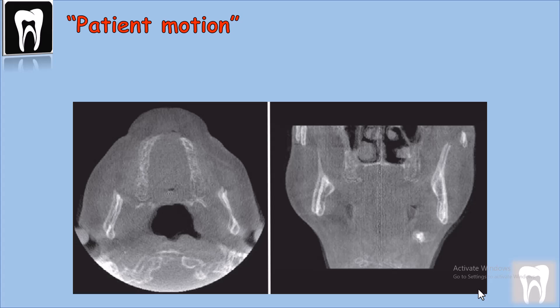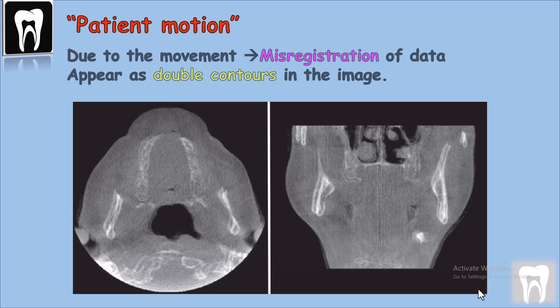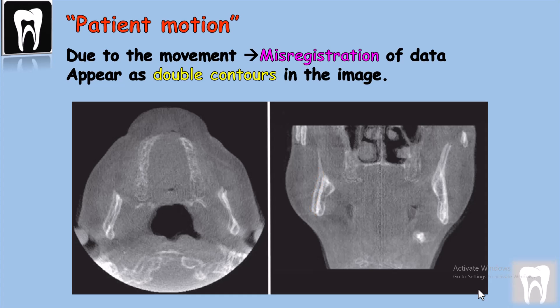Motion artifact is caused by patient movement during the scan and can cause misregistration of data. It appears as shading or streaking — we can see a double contour of the bones.